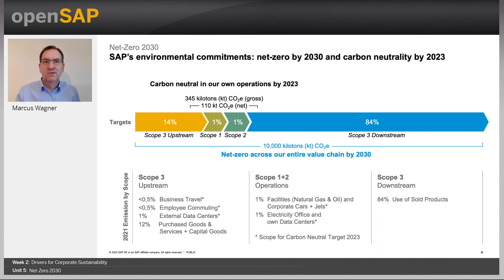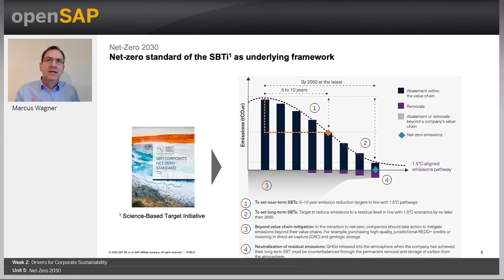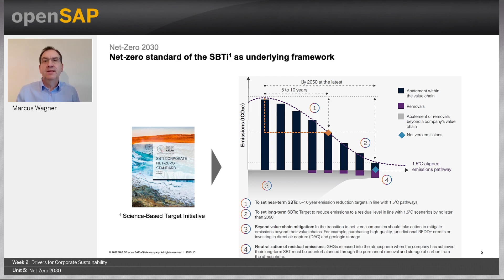Welcome to week two, unit five. My name is Markus Wagner and I'm responsible for all environmental sustainability initiatives at SAP. Today, I will talk about net zero — one of the most challenging environmental issues to foster a low carbon and circular future. The training should help you understand what SAP's net zero commitment is, the differences between net zero and carbon neutrality targets, how the transformation roadmap will look like, and what challenges we are facing along our journey to become a net zero company.